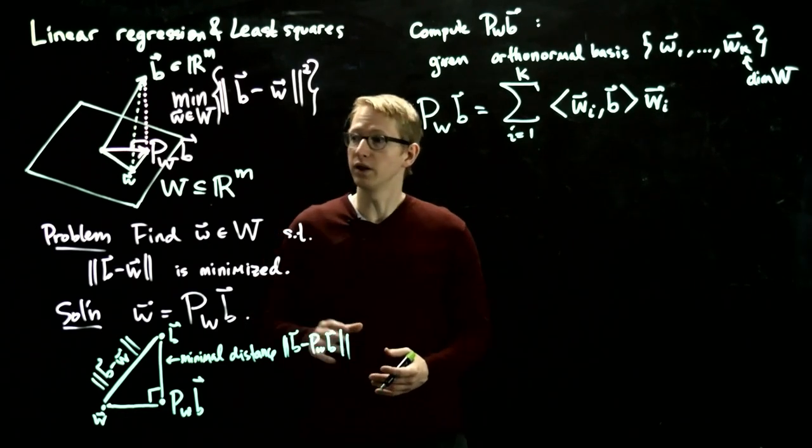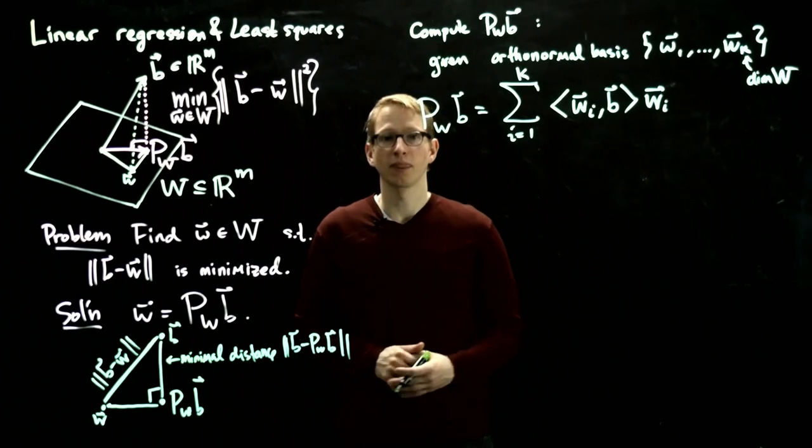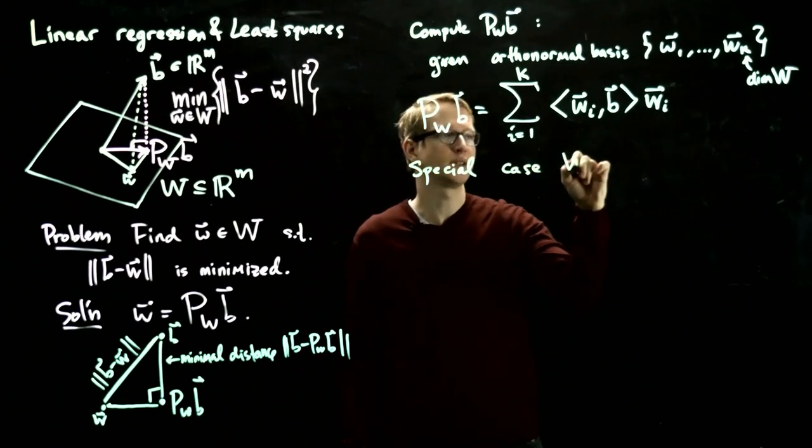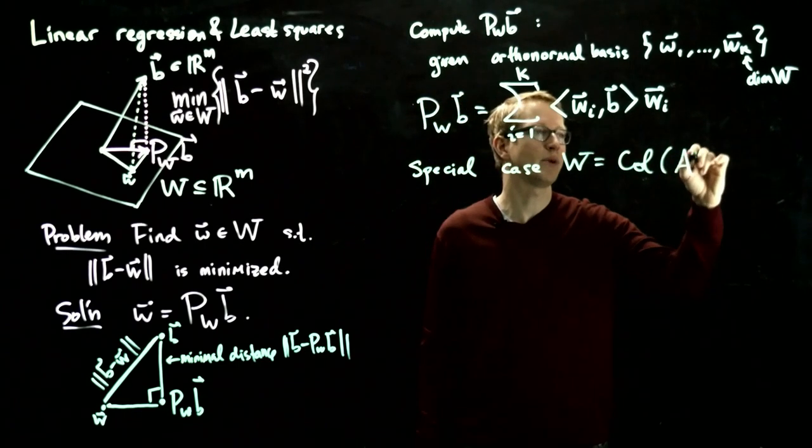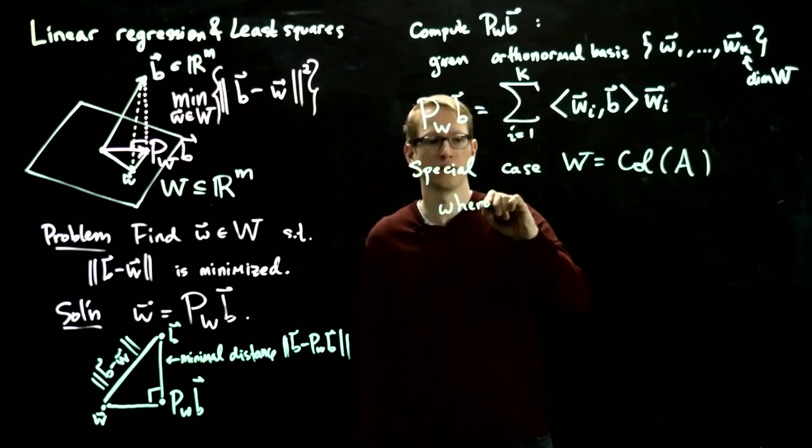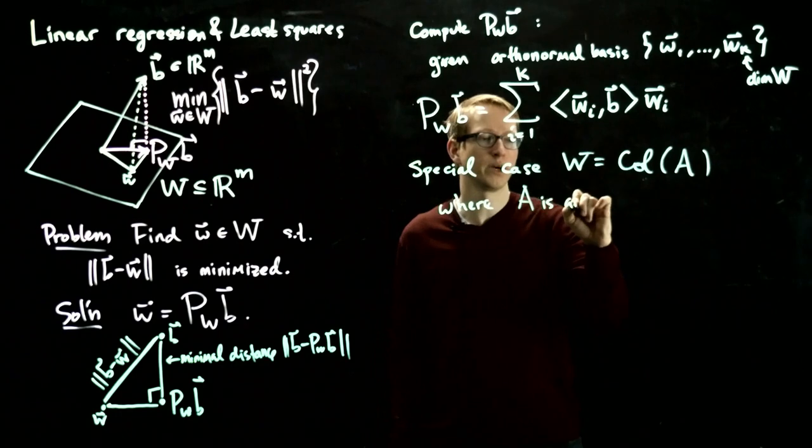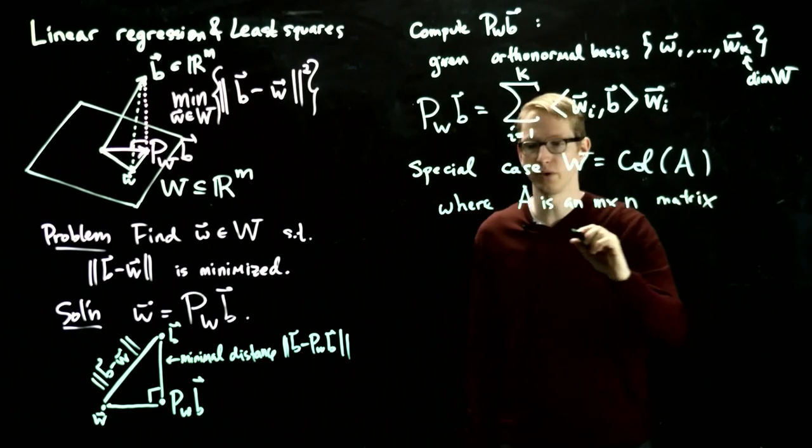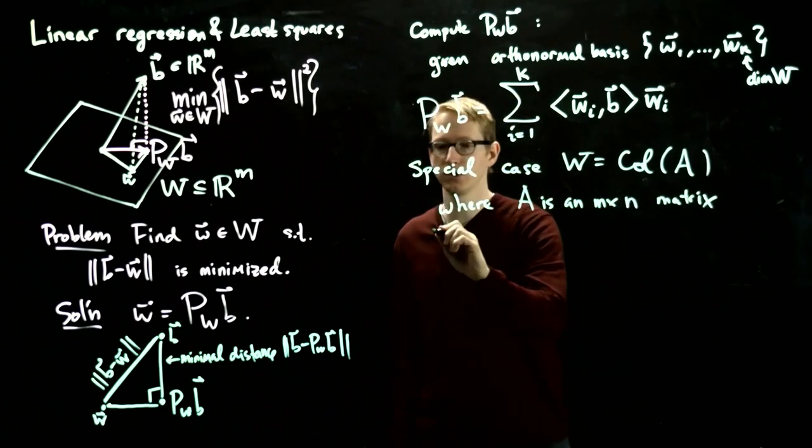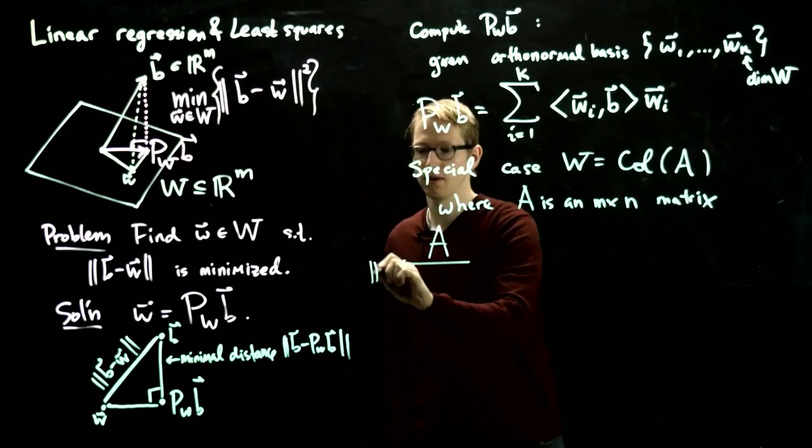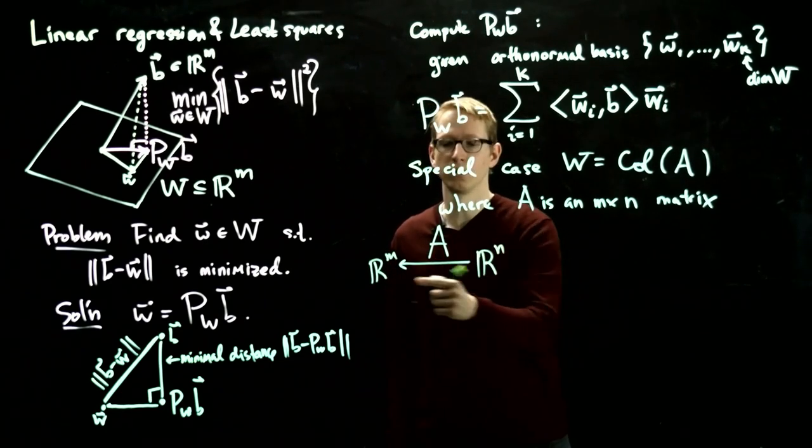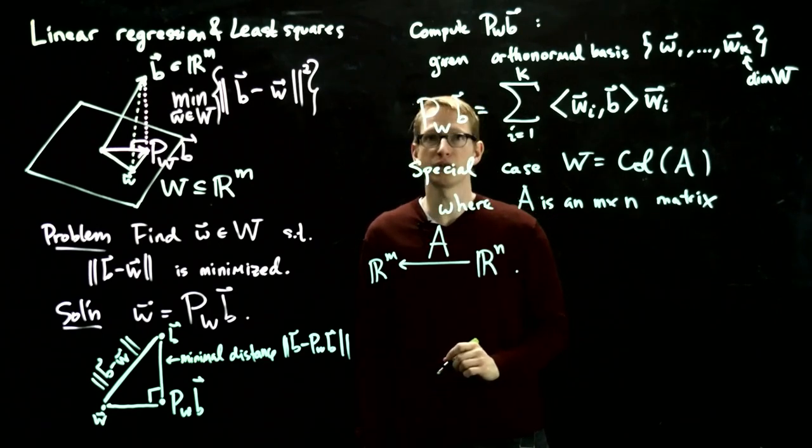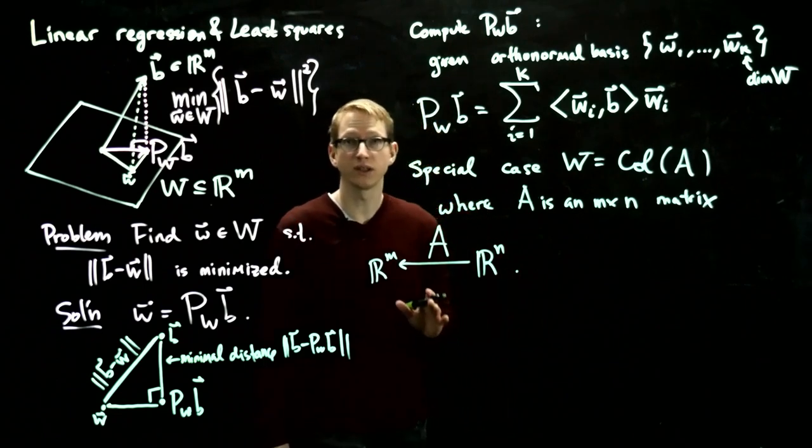So we'll look at a special case of this problem, where W happens to equal the column space of some m by n matrix A. So in other words, you can think of A as a linear transformation from R^n to R^m. And in this special case, we'll find a very interesting solution to this problem.